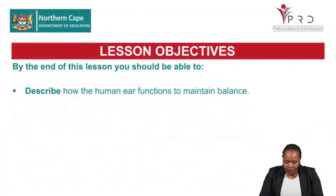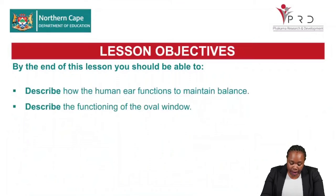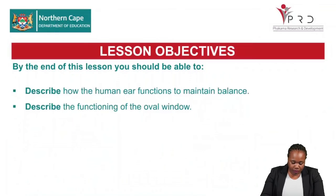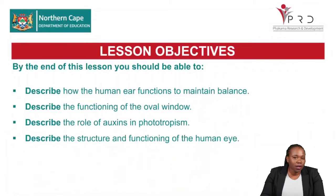We are going to look at the receptors involved in balance and the stimuli involved in maintaining the body's balance through the ears. You should be able to describe the functioning of the oval window and understand what would happen if it is damaged. Next, you should be able to describe the role of auxins in phototropism, and describe the structure and functioning of the human eye — knowing how to label each and every part.